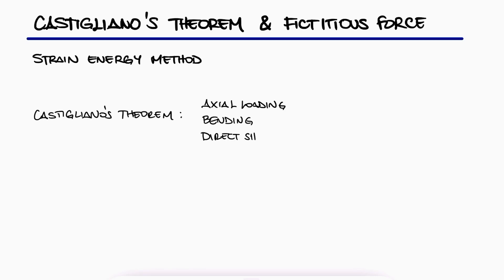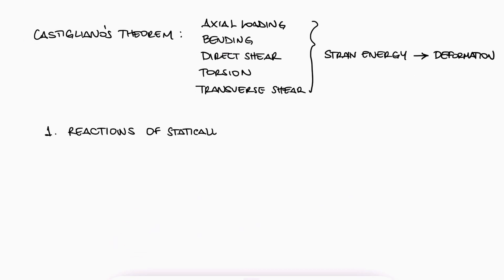Castigliano's theorem is a strain-energy-based method with which we can easily calculate deflections. This is helpful for finding reactions of indeterminate structures, which you already know is when a statics analysis is not enough to find all forces and therefore all stresses.